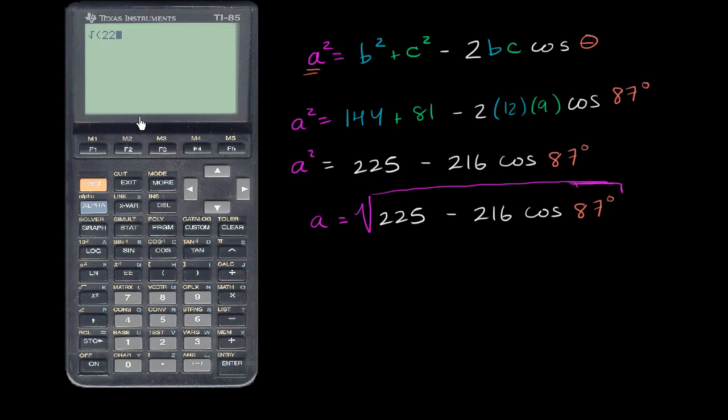So let me exit. So it's going to be 225 minus 216 times cosine of 87 degrees. Not 88 degrees. 87 degrees.